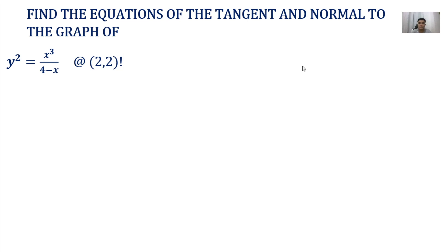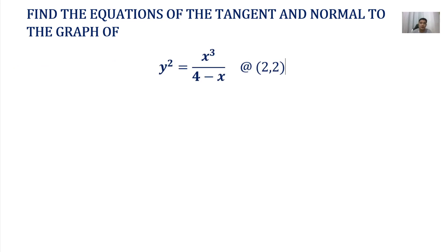Hello guys, we have a problem here that we are going to answer. The question is related to how to solve for the equations of the tangent and normal. So the question is this: Find the equations of the tangent and normal to the graph of y squared equals x cubed over 4 minus x at points (2, 2). The given function is in implicit form.